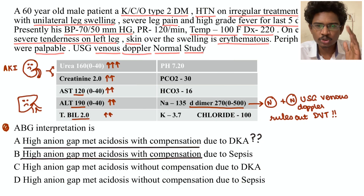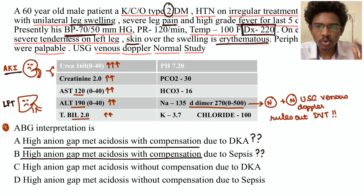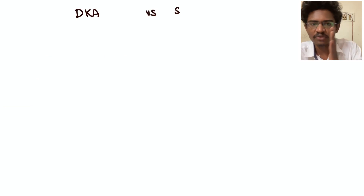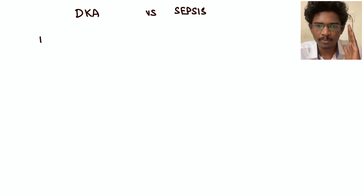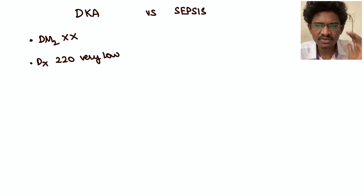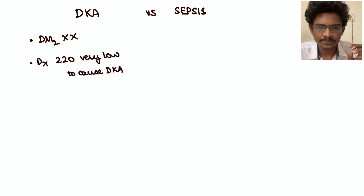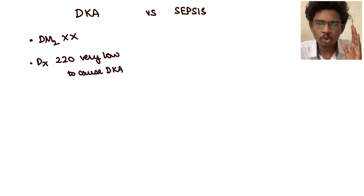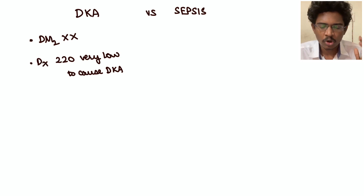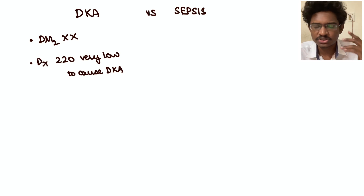Next, just look at the options — they are asking HAGMA due to DKA or sepsis, with or without compensation. We can stop here and analyze the clinical question. This is a type 2 diabetic patient — DKA is rare in type 2. Dextrose is 220, not high enough to cause DKA. We should check urine and blood for ketones, but let's check for sepsis causes.